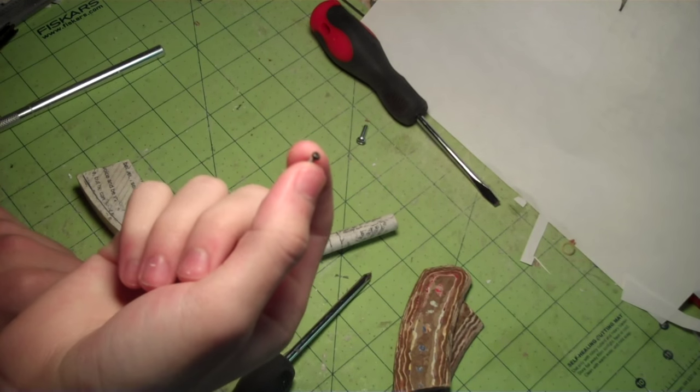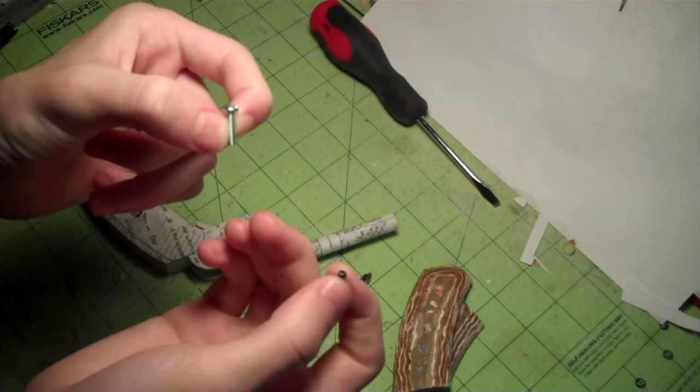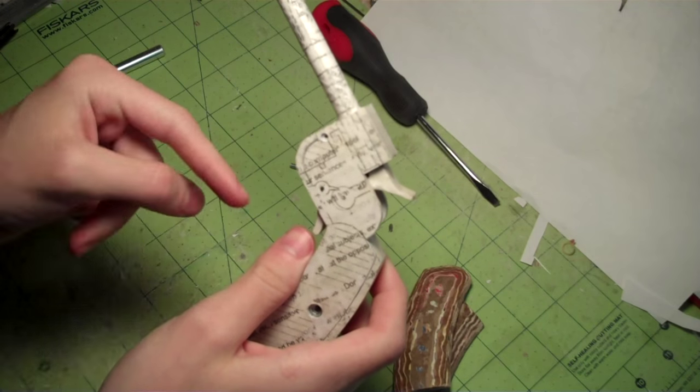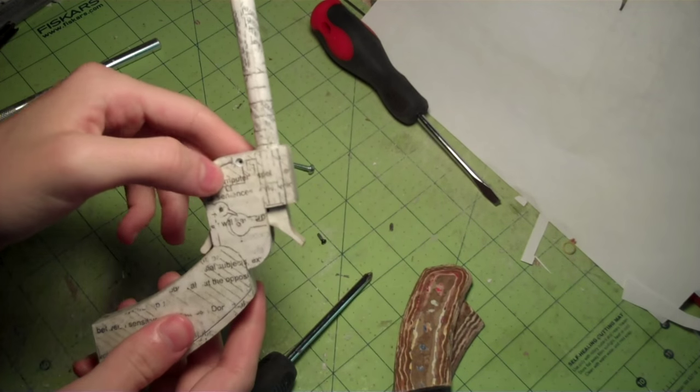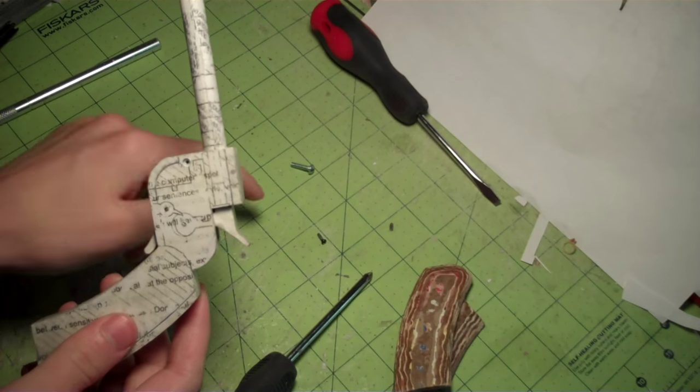So you can see this screw is a lot smaller than this one, but I couldn't fit one this size over here because it would interfere with some of these cross pins. And I also wanted to make sure this screw was flush with the surface, just like this one.